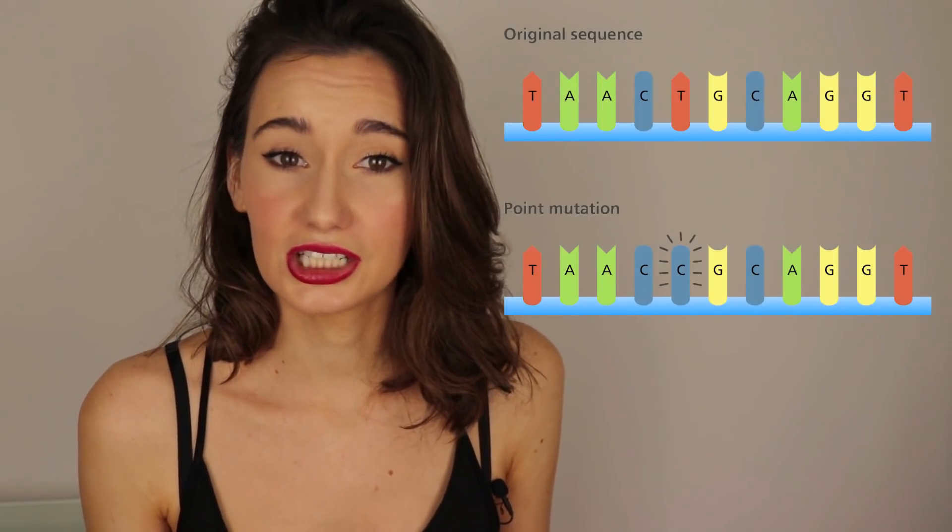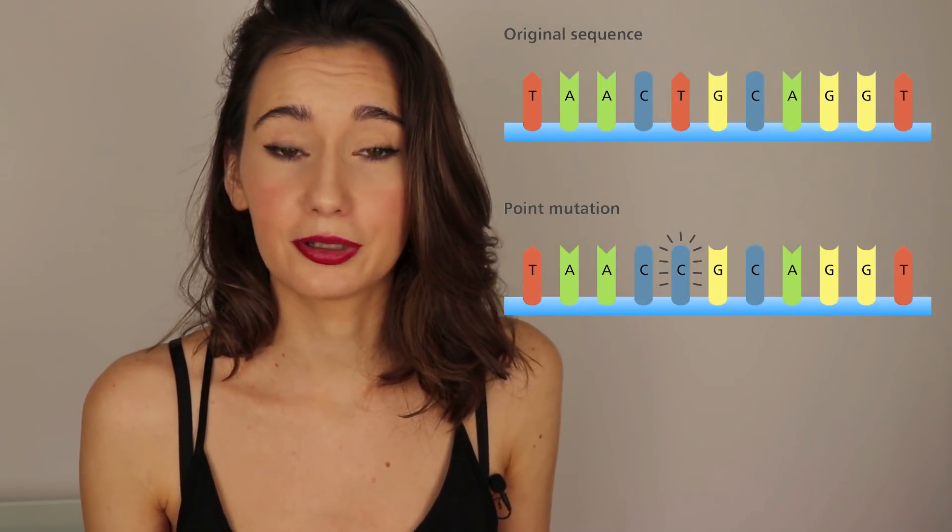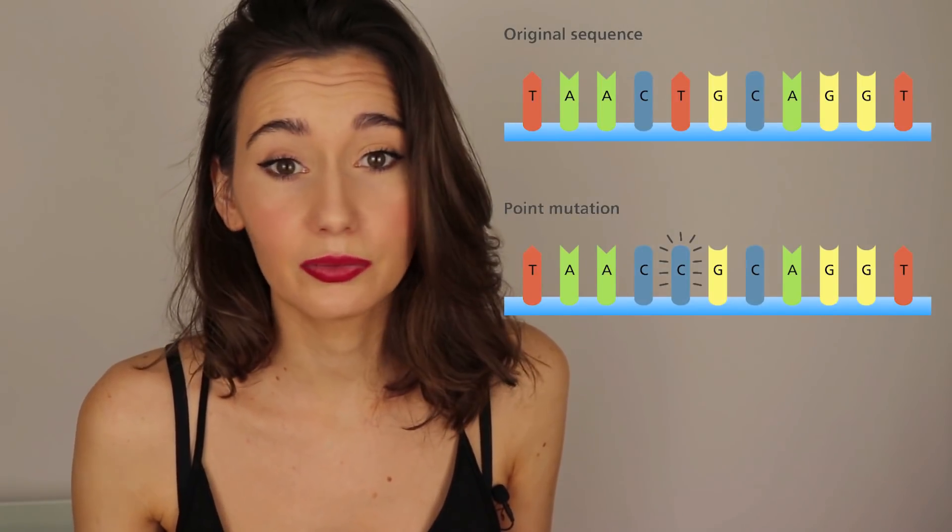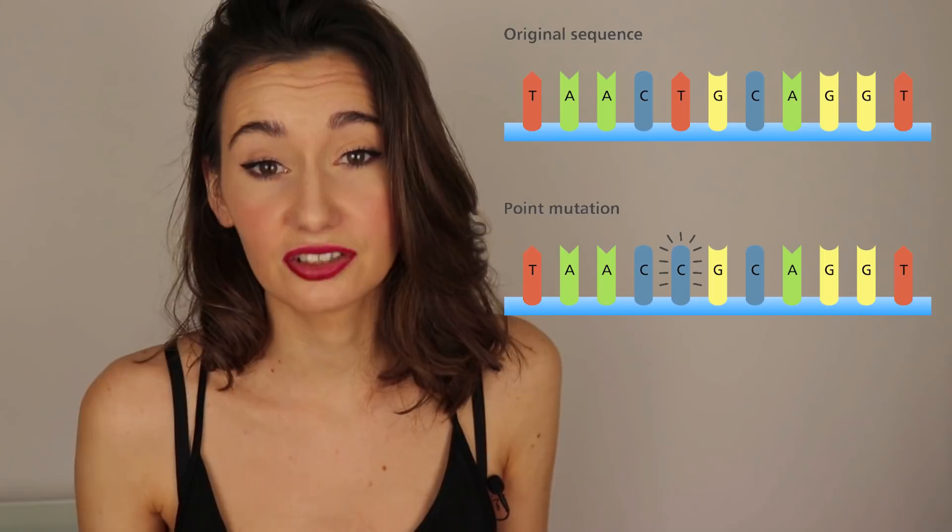Sometimes something happens in the writing of the genetic code, kind of like a typo, so that the details don't make sense anymore. This is called a mutation, and mutations can happen spontaneously when the cell is getting ready to divide.